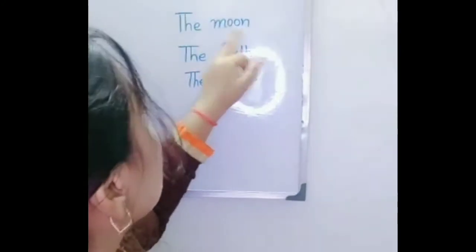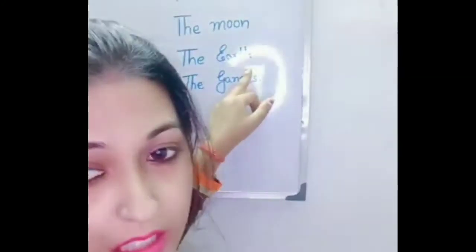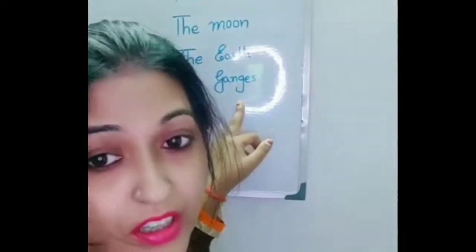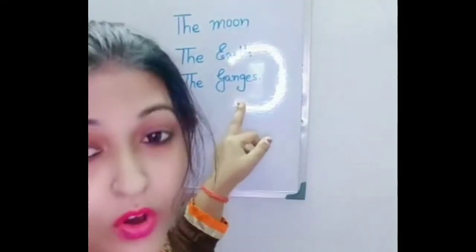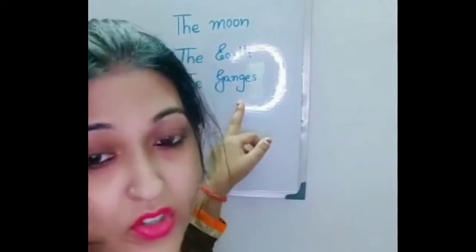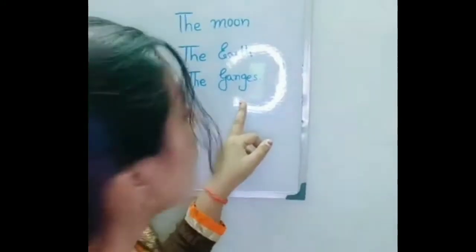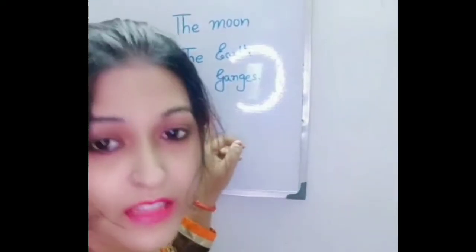Similarly, the earth is also one and only. So when we refer to any object which has no other alternative — there is no other one like it — then we can use article 'the'.